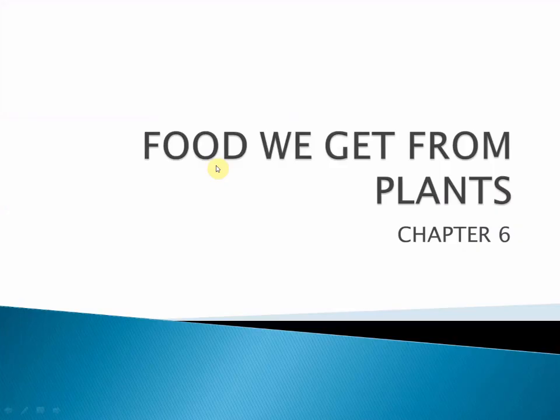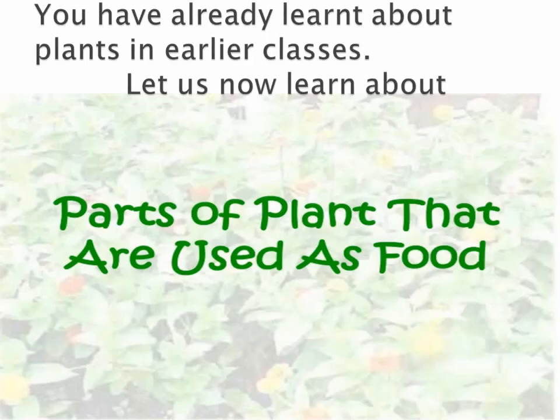Hello students. Today we are going to learn about the chapter: food we get from plants. Plants are found almost everywhere on the earth. They are of different shapes and sizes. They can be broadly classified as trees, shrubs, herbs, creepers and climbers. You have already learned about them in earlier classes.